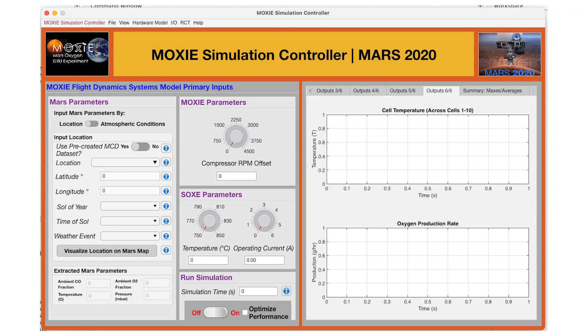The team used simulation to simulate commands on the ground before sending them to Mars, since the team would have no way to fix the device if something went wrong.